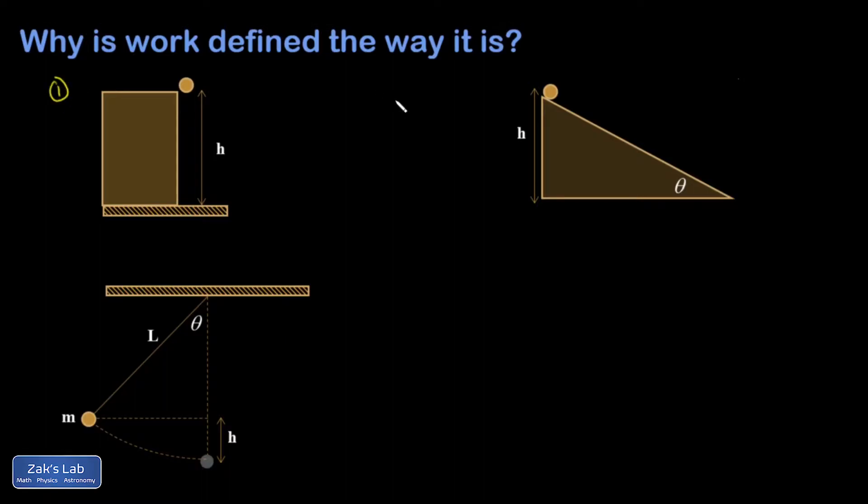So here's example one, example two, example three. And again, the point I'm trying to make is that for gravity, the work that it does is completely independent of the path taken by the object.